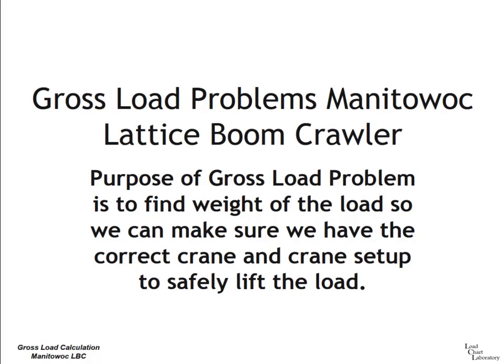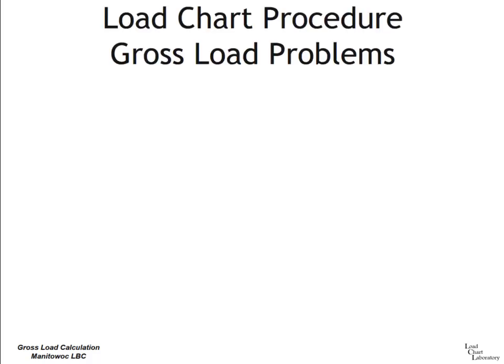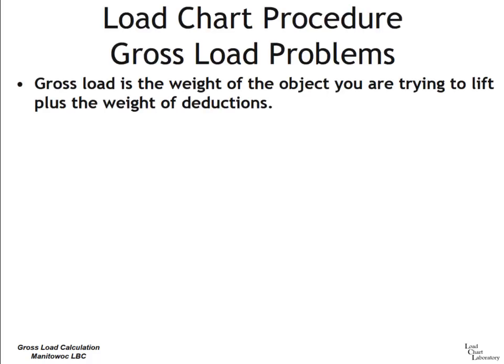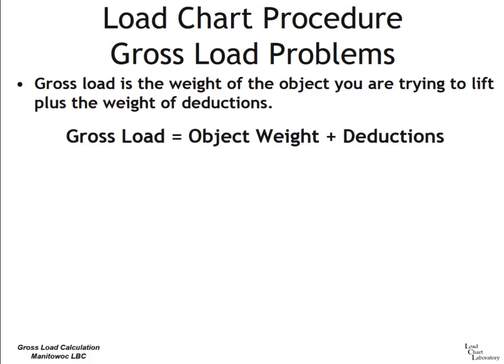Let's talk about gross load. The purpose of a gross load problem is to find the weight of the load so we can make sure we have the correct crane and crane setup to safely lift the load. The gross load — the weight of the load — is not just the weight of the object itself. Gross load is the weight of the object you're trying to lift plus the weight of deductions. The formula: Gross load equals object weight plus deductions.